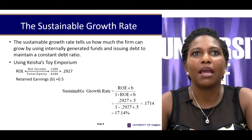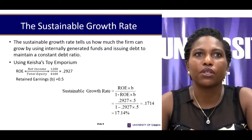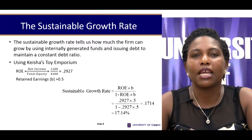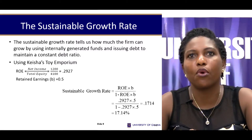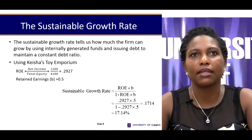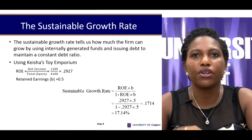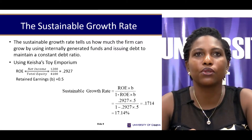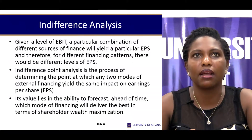On the other hand, a firm can sustain a particular growth rate if it can grow using internally generated funds and issue debt to maintain a constant debt ratio. For a firm with a return on equity of 29.27% and a retention ratio of 50%, its sustainable growth rate is approximately 17.14%. This tells us the difference between having access to external funds versus relying solely on retained earnings. A firm's ability to source external financing is therefore very crucial to its quest to grow beyond the limitations of internal finances.